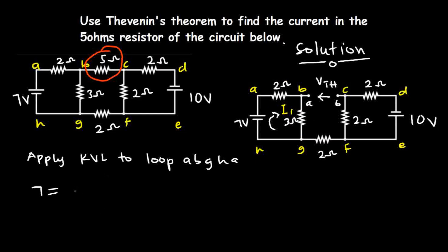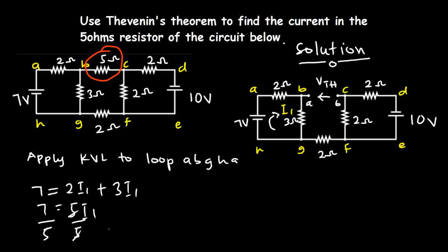The 7 volts will be equal to the voltage drop across the 2-ohm resistor, which is 2 multiplied by I1, plus the voltage drop across the 3-ohm resistor, which is 3 multiplied by I1. So we have 7 equals 5·I1. Dividing both sides by 5 gives I1 equal to 7/5 amperes.